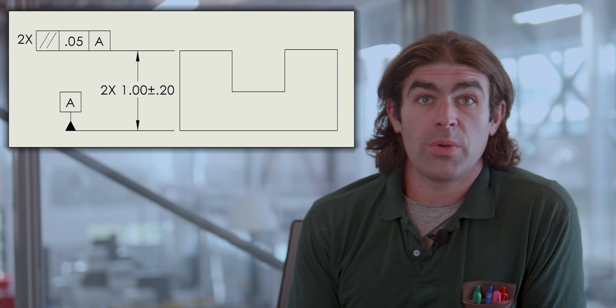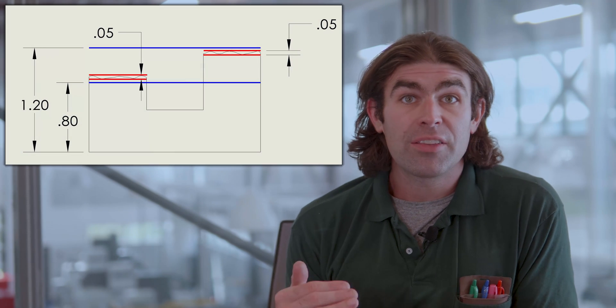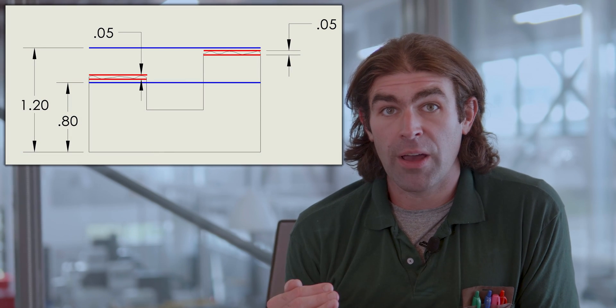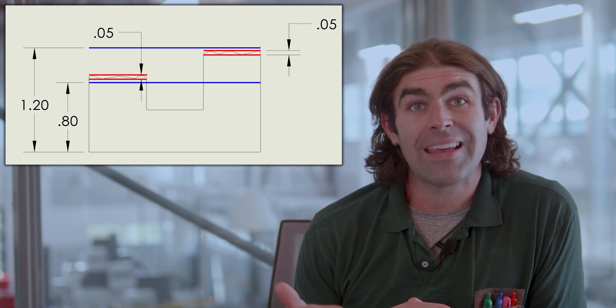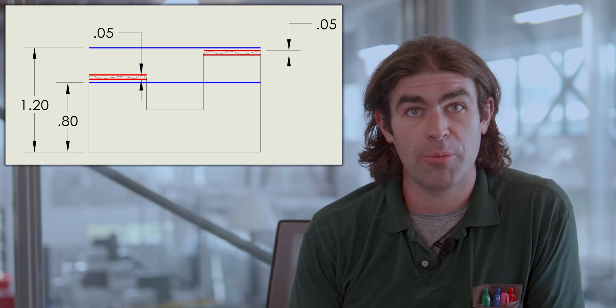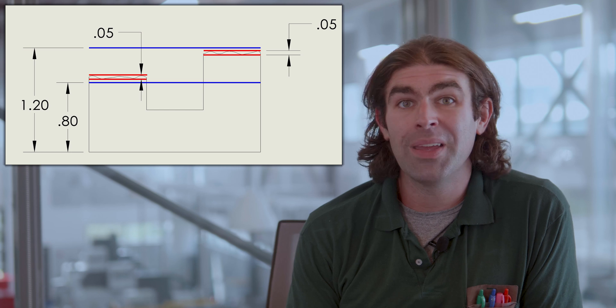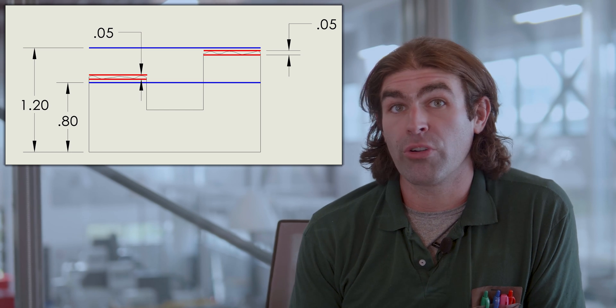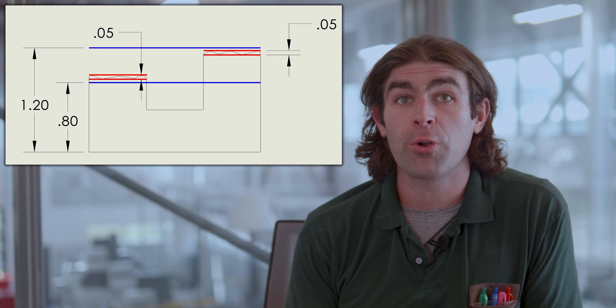All this is going to do is control the location within that limits of size band. The two surfaces have to be parallel, but only to the datum and individually. One can be at the top of the tolerance band, one can be at the bottom. There's no coplanarity with parallelism. Again, even if you put two surfaces or two times by the feature control frame, no coplanarity.